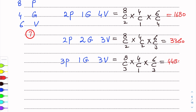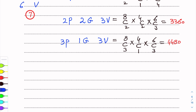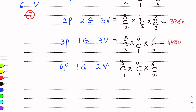Last option is: 4 pianists, 1 guitarist, 2 violinists. Here all three restrictions are followed — more violinists than guitarists, at least 2 pianists, at least 1 guitarist. So we calculate 8C4 × 4C1 × 6C2, and after calculating we get 4200.